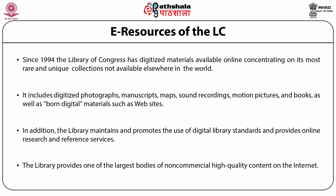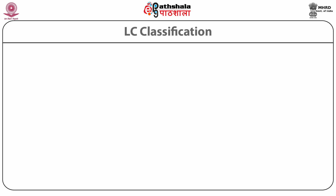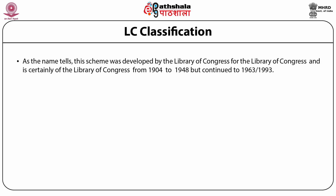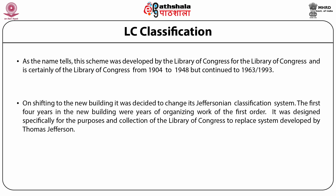The library provides one of the largest bodies of non-commercial, high-quality content on the Internet. LC Classification: as the name tells, this scheme was developed by the Library of Congress, for the Library of Congress, from 1904 to 1948, but continued to 1963 to 1993. On shifting to the new building, it was decided to change its Jeffersonian classification system. The first four years in the new buildings were years of organizing the work of the First Order. It was designed specifically for the purpose and collection of the Library of Congress to replace the system developed by Thomas Jefferson.